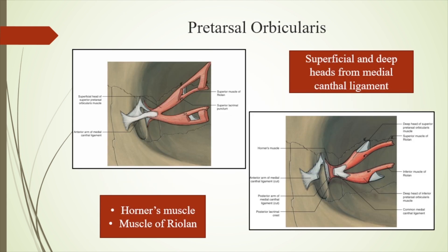The palpebral part is divided into pretarsal and preseptal parts. The pretarsal originates from the superficial and deep heads of the medial canthal ligaments. The superficial heads overlie the ampulla and cover the canaliculi, whereas the deep heads form Horner's muscle, which inserts on the posterior lacrimal crest and lacrimal fascia. A small part of the pretarsal component is the muscle of Riolan, which is separated from the pretarsal part by the eyelash follicles and forms the gray line.